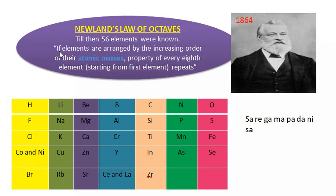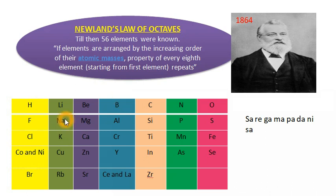His law states: if elements are arranged in increasing order of their atomic masses, the properties of every eighth element starting from the first element repeat. When elements are arranged from smallest to largest atomic mass, the property of every eighth element is the same as its respective first element. He divided the then-known elements into horizontal rows of seven elements, because at the eighth element the properties repeat, placing it in the group of the first element.